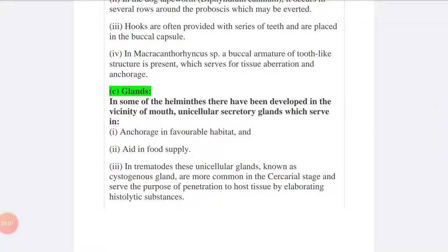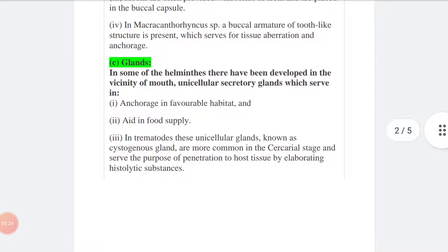The next category is glands. In some of the helminths, there have been developed in the vicinity of mouth unicellular secretory glands which serve in anchorage in favorable habitat and aid in food supply. In nematodes, these unicellular glands known as esophageal glands are more common in larval stages and serve the purpose of penetration to the host tissue by elaborating histolytic substances.